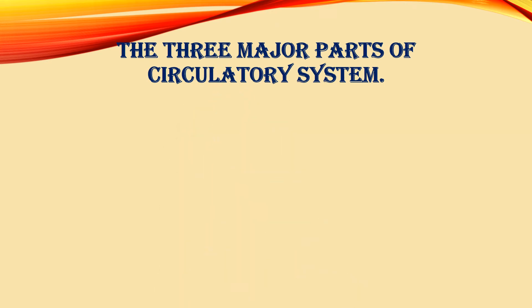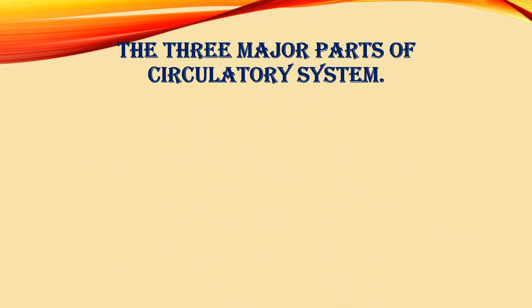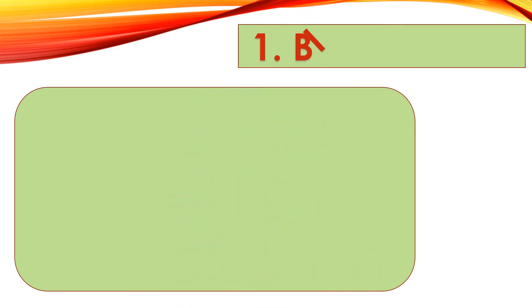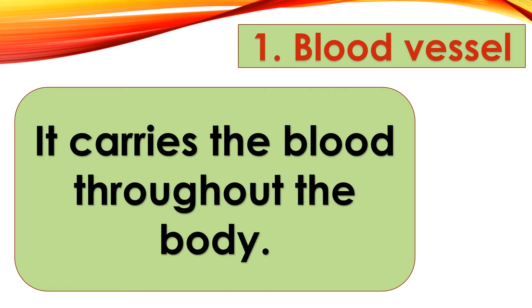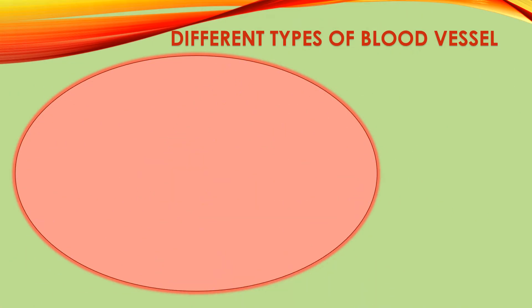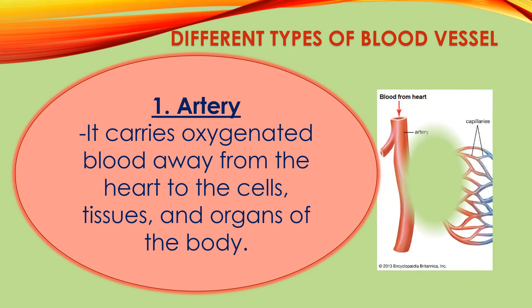Blood vessels carry blood throughout the body. There are three kinds of blood vessels. First, the arteries. Arteries carry oxygenated, or oxygen-rich, blood away from the heart to the cells, tissues, and organs of the body.